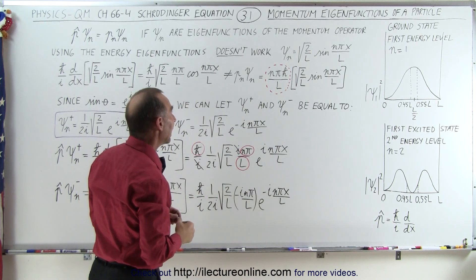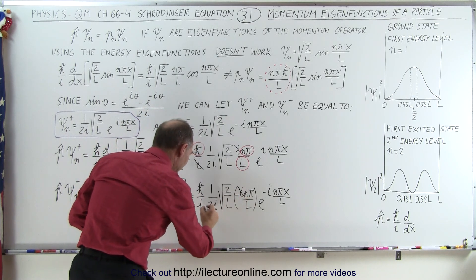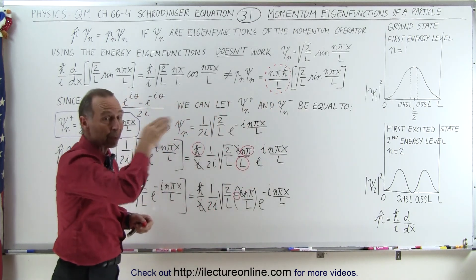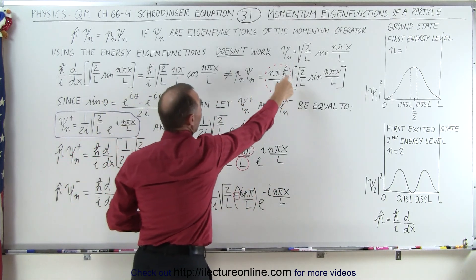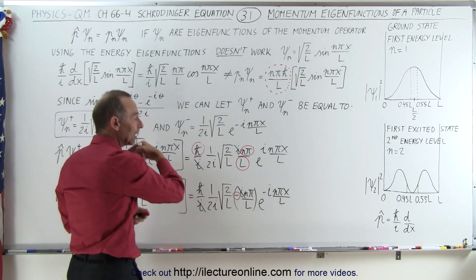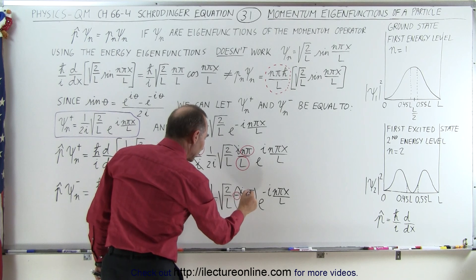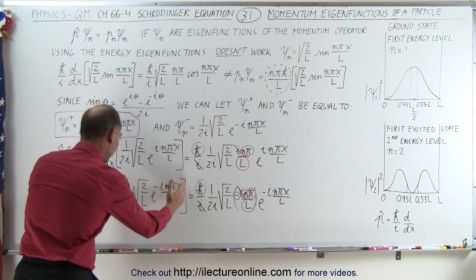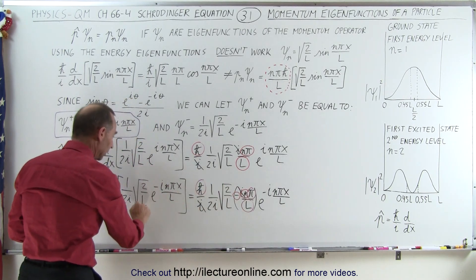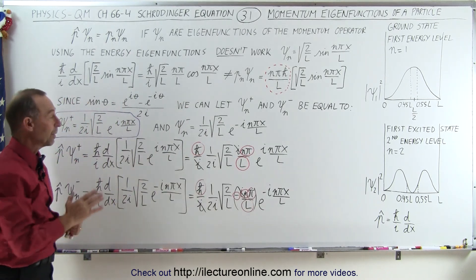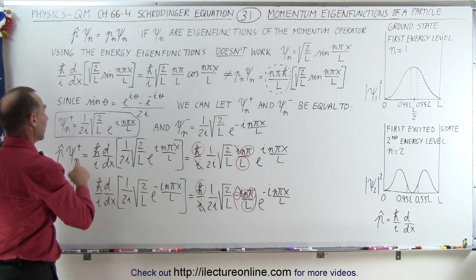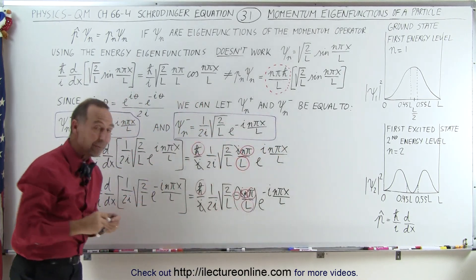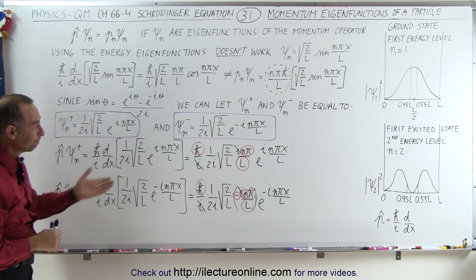Before proceeding, let's cancel the i with this i. We need a minus sign here — before we had a plus, because that was for momentum going to the right; now we need a minus for momentum going to the left. This will be replaced by minus n pi h-bar over L for the negative momentum eigenvalue. What remains — 1 over 2i, the square root of 2 over L, and e to the minus i n pi x over L — matches our assumed eigenfunction. It works for both directions, which means these are indeed the momentum eigenfunctions of a particle in a one-dimensional box.